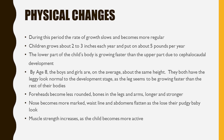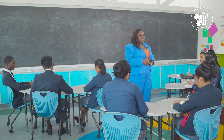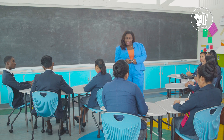Skeletal growth in middle childhood is also associated with losing the deciduous, or baby, teeth. By the end of early middle development, children's foreheads become less rounded, bones in the legs and arms become longer and stronger, the nose becomes more marked, and the waistline and abdomen flatten as they lose their pudgy baby look. Muscle strength increases as the child becomes more active, and many children want to engage in strenuous physical activity for longer periods of time.